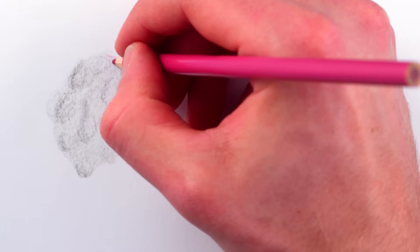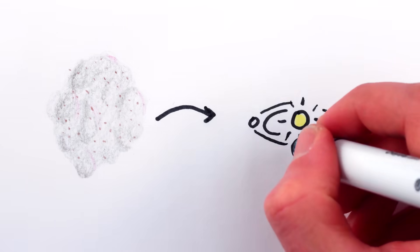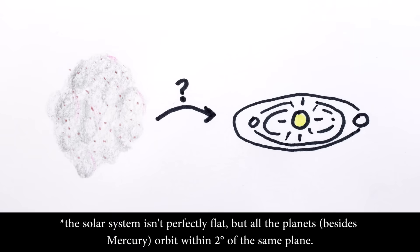However, this nebula started off more or less as a big, shapeless blob, so how did our solar system end up with all the planets and their moons orbiting in a flat disk?